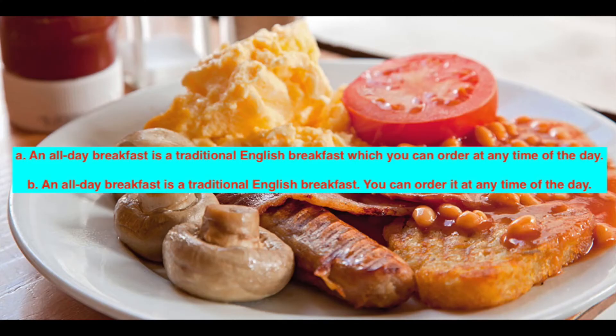Without further ado, let's look at two different sentences and see if you can spot which sentence has got a relative pronoun. A: An all-day breakfast is a traditional English breakfast which you can order at any time of the day. B: An all-day breakfast is a traditional English breakfast. You can order it at any time of the day.